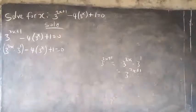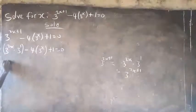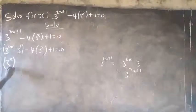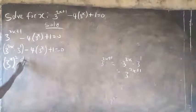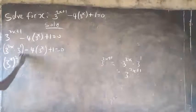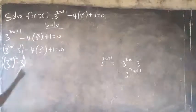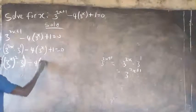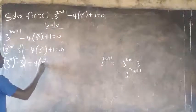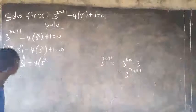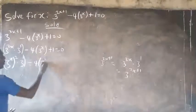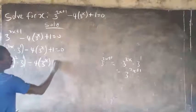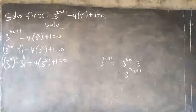Now look at 3 raised to the power of 2s — I'll break it down again. This can be written as 3 raised to the power of s, raised to the power of 2, multiplied by 3 raised to the power of 1, which is 3. So I can close the bracket, minus 4 into 3 raised to the power of s plus 1, equals 0.